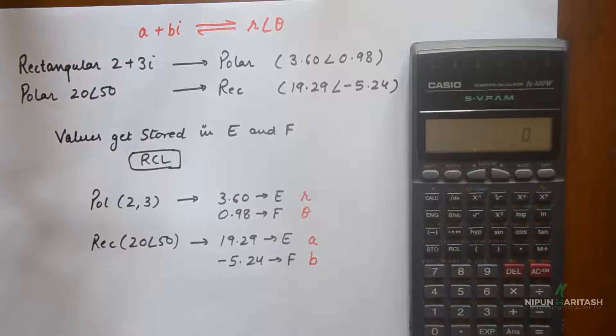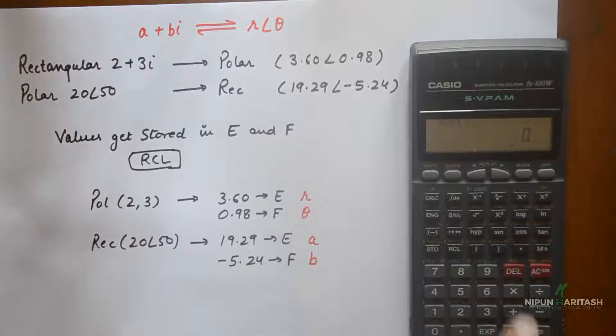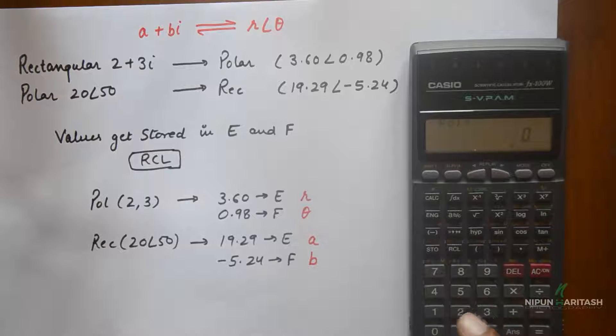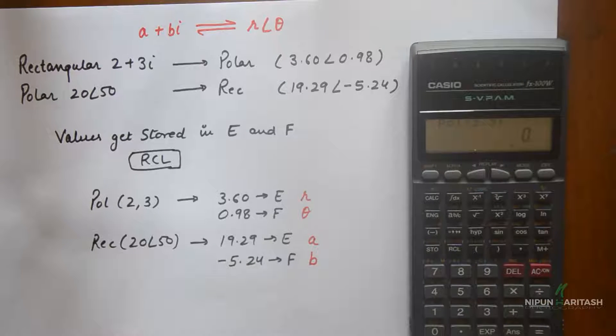So how do you enter that? For example, you want to convert this rectangular into polar. What you need to do is press shift and then polar. Then how do you enter 2 plus 3i? It is entered as 2 comma 3, and then you need to close the bracket.